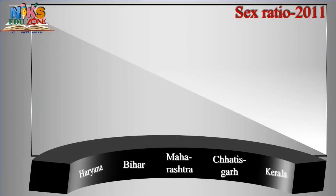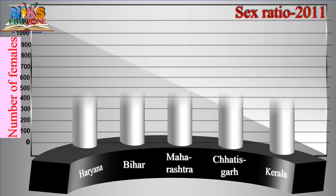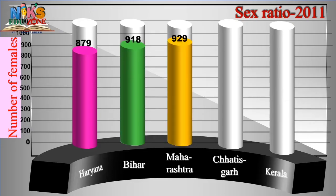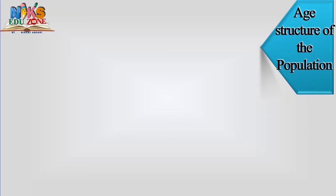As per Census 2011, the sex ratio of a few states of India: in Haryana there were 879 females for every 1,000 males; in Bihar 918; in Maharashtra 929; in Chhattisgarh 991; and in Kerala the count was 1,084.